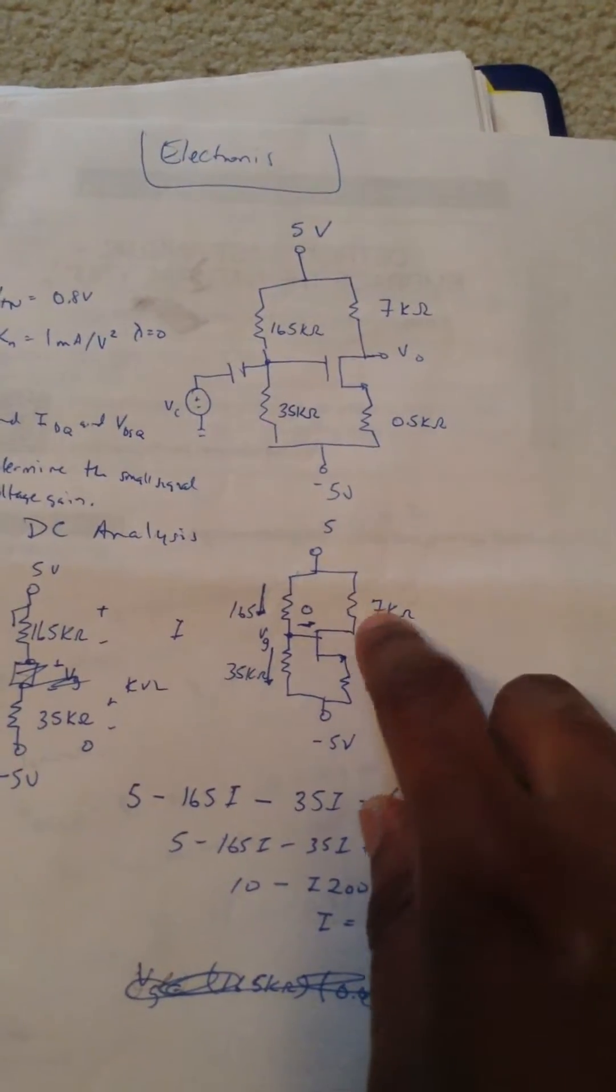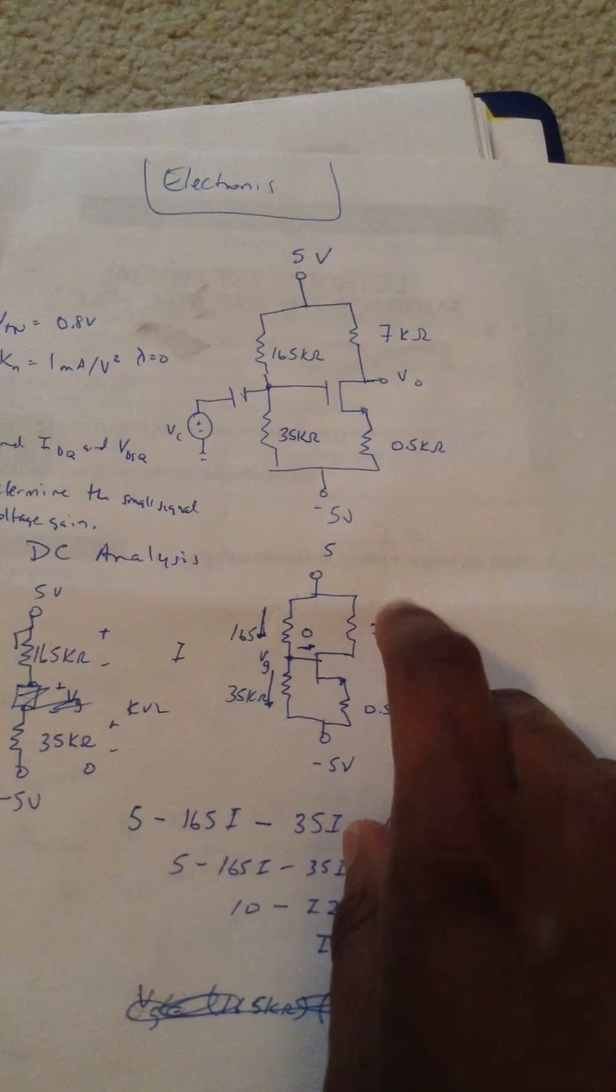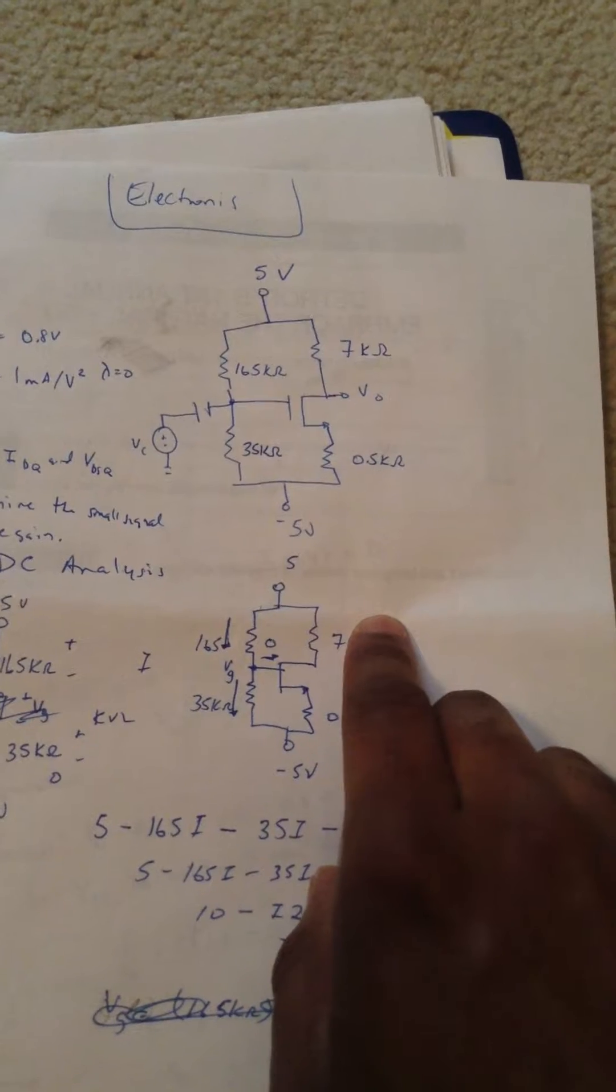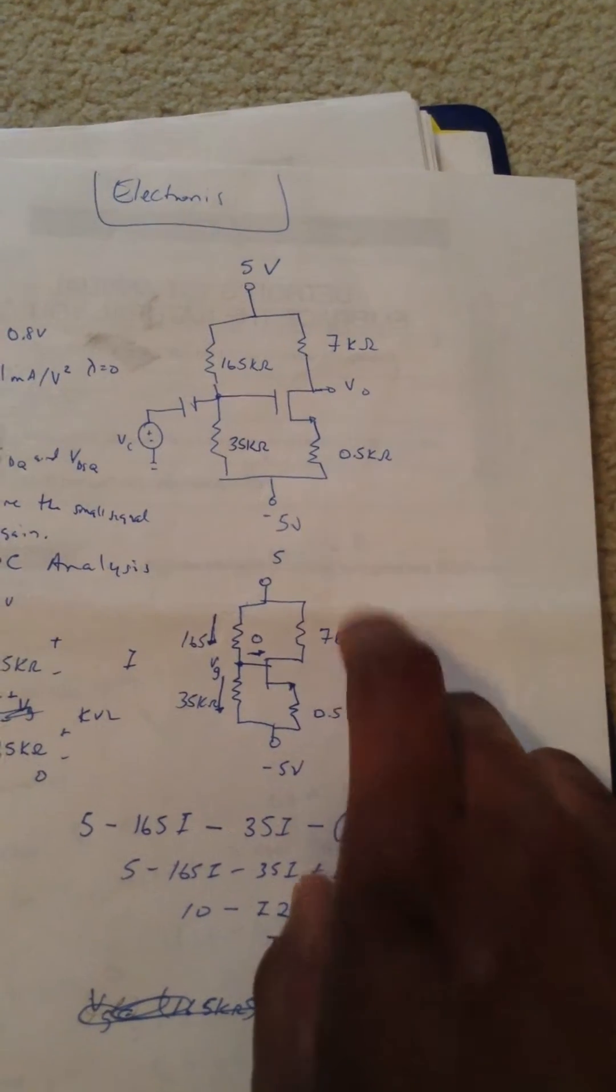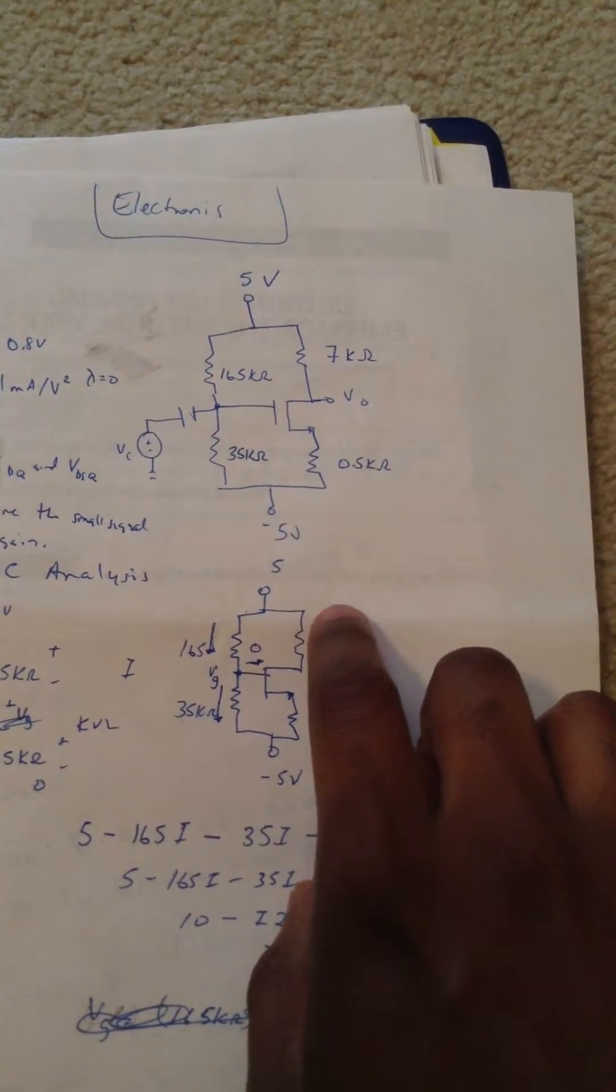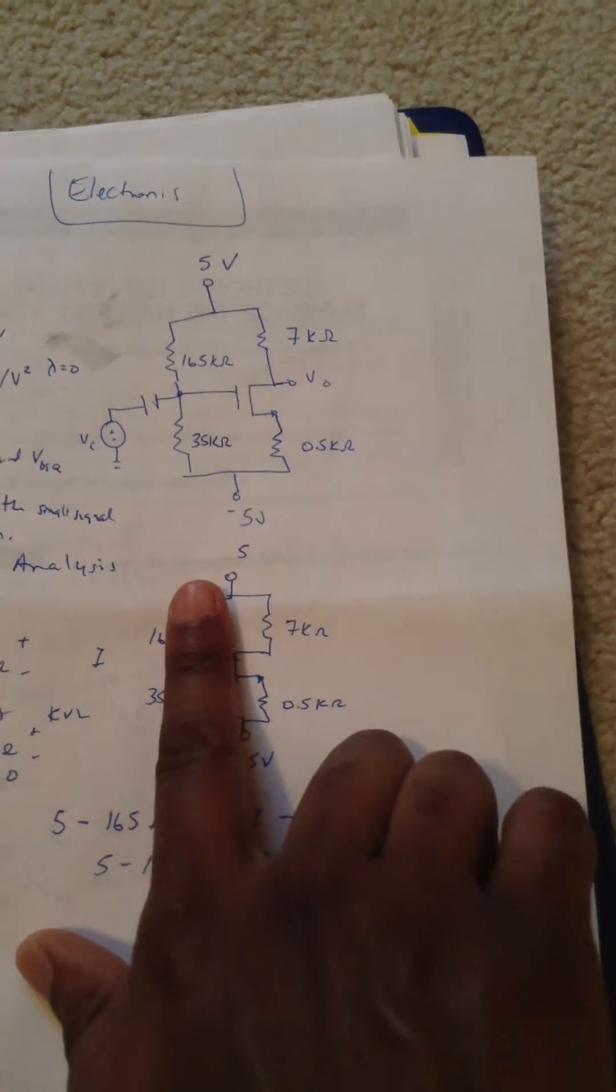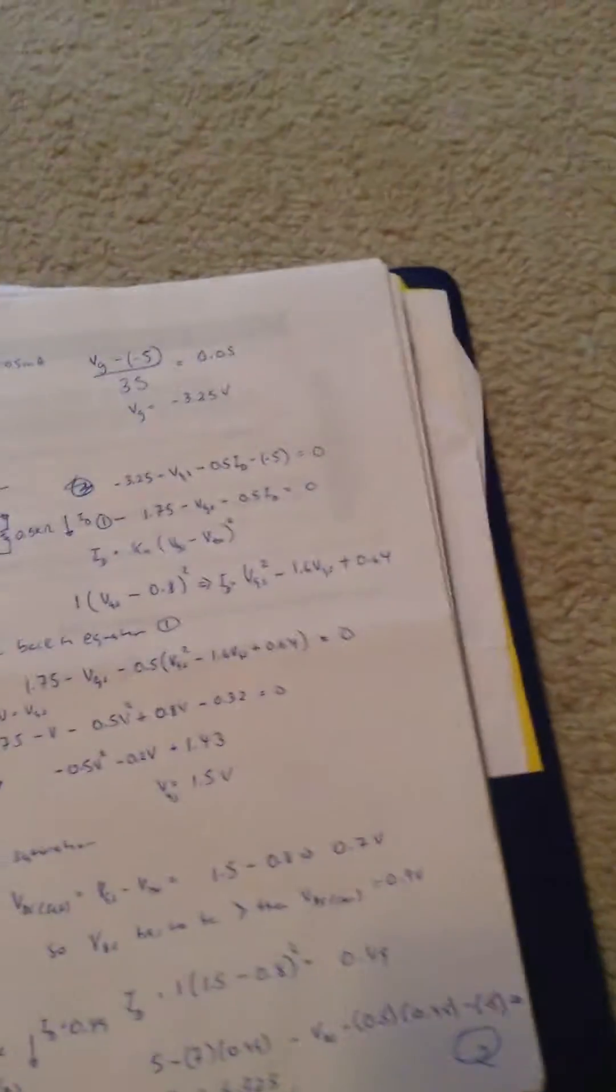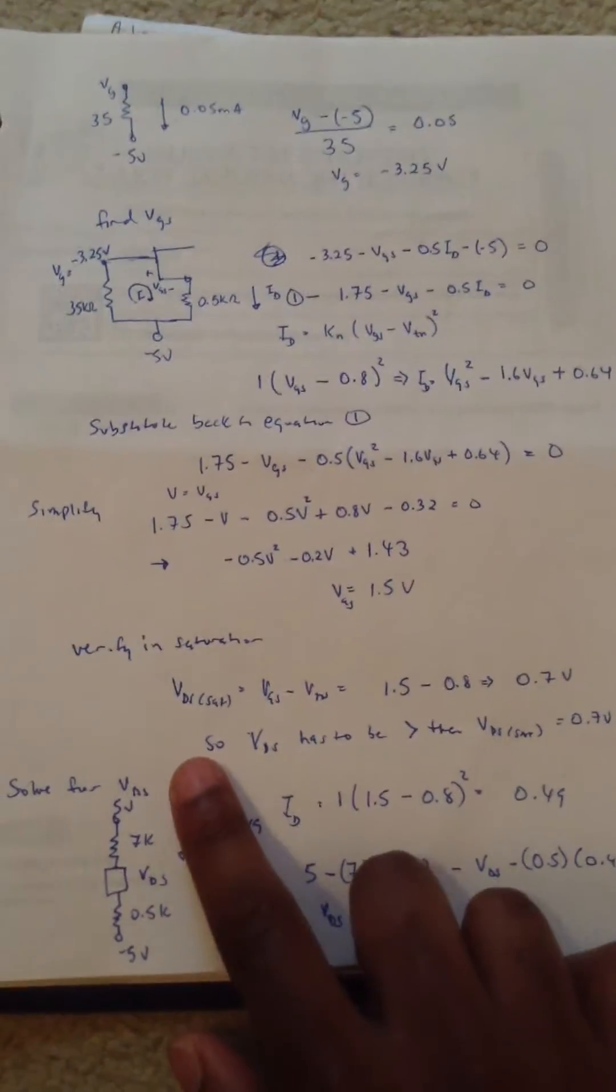Now that we have that, we can solve for VDS, which is the drain source voltage in between here. We have the drain current, which for this type of transistor, the drain current is equivalent to the source current. And so we can just take this, make it into a simple circuit, using circuit analysis again.